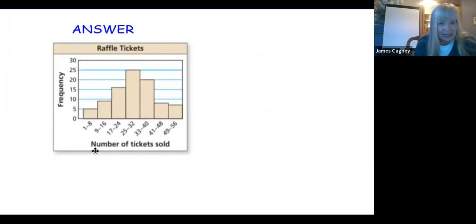Here's the answer to this. Here's the number of tickets sold. If I look at this, this is pretty even. I could pretty much fold it in half and it would match. So I would say that this one is symmetric. The data is pretty evenly distributed on this one.